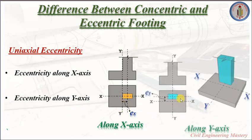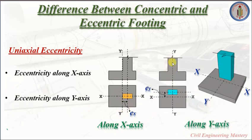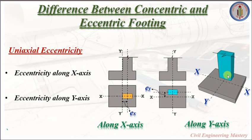Next, eccentricity along the y-axis. Here, the column load is moving in the direction of y from the center of gravity of the footing. From the 3D image, you can see clearly that the column has moved away from the center of gravity of the footing in the y direction.